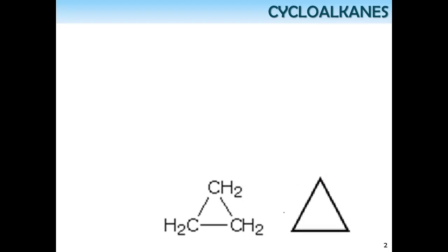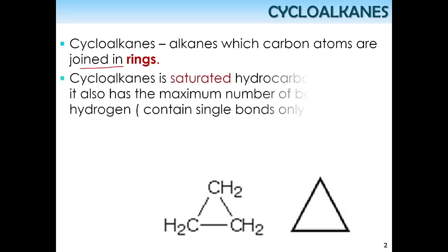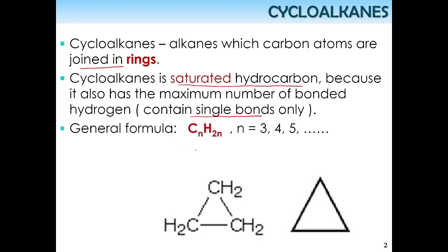Cyclopropane can also be drawn in skeletal form like a triangle. Cycloalkanes are alkanes joined in rings — a closed chain. It is still a saturated hydrocarbon because it has the maximum number of bonded hydrogens and carbons only have single bonds. The general formula is CnH2n, which is similar to alkenes, but for closed chain rings it is CnH2n.